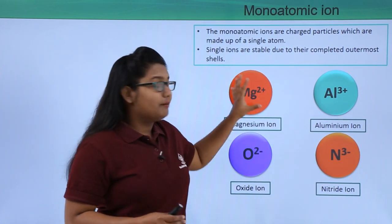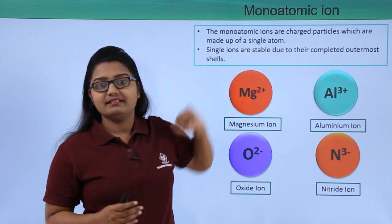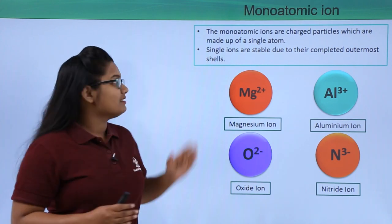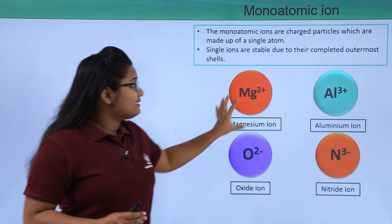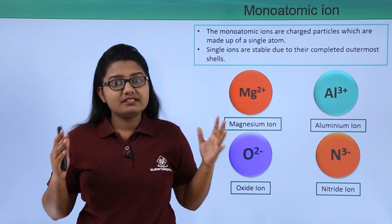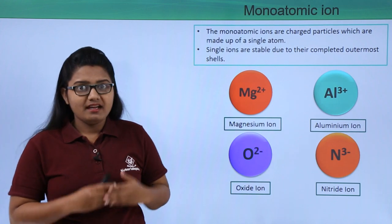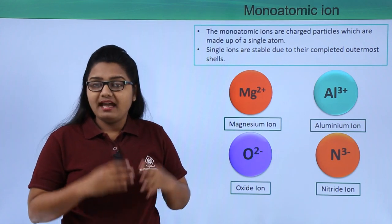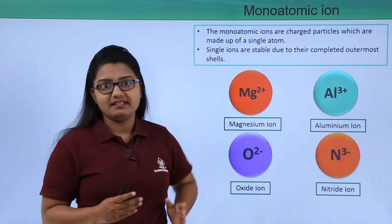These ions are made up of only one atom of an element, and therefore we call them monoatomic ions. The word 'mono' stands for one atom. These ions are very stable structures, meaning they have all their shells filled — either by gaining electrons or losing electrons — making their shells fully filled and becoming electrically charged either positively or negatively.